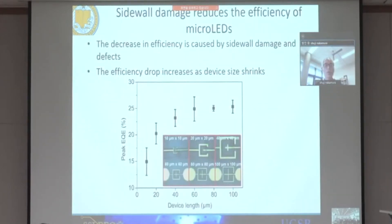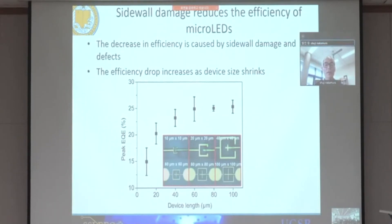This shows the EQE of the LED as a function of chip size. When the chip size is 100 microns, EQE is okay at about 25%. But if the chip size is smaller than 14–15 microns, the EQE suddenly drops. This has been the big problem of the micro LED chip.